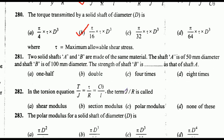Two solid shafts A and B are made of the same material. Shaft A is 50 mm diameter and shaft B is 100 mm diameter — the strength of shaft B is dash as that of shaft A. Options: one half, double, four times, eight times. Correct answer is option D: eight times. In the torsion equation T/J = τ/r = Cθ/l, the term J/r is called: shear modulus, section modulus, polar modulus, or none of these. Correct answer: option C — polar modulus.